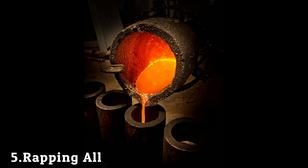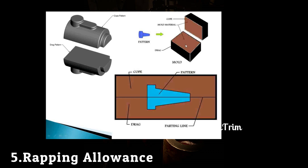When the pattern is removed from the casting, it will slightly increase the dimension of the casting. So to compensate this change, the pattern is made slightly smaller than the casting. This change in dimension is known as wrapping allowance.